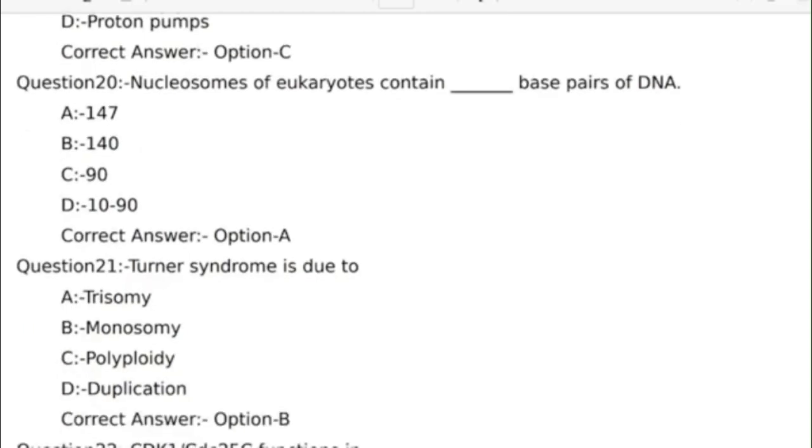Twenty-first question: Turner Syndrome is due to? Answer options: Option A, Trisomy; Option B, Monosomy; Option C, Polyploidy; Option D, Duplication. Correct answer: Option B, Monosomy.